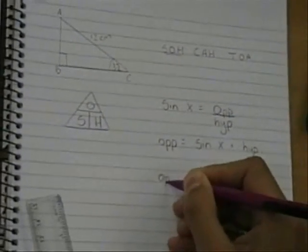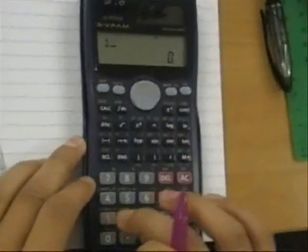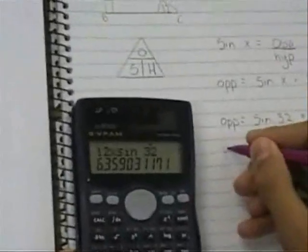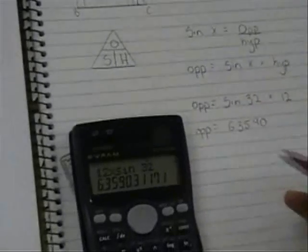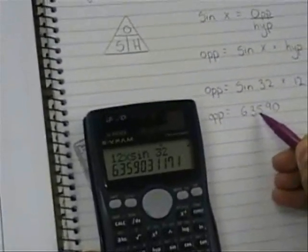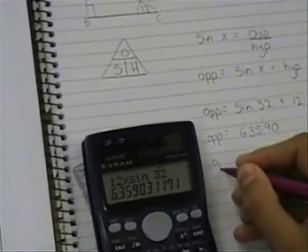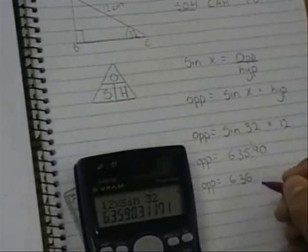So opposite equals sine 32 times by 12. So we are asked to do this in three significant figures. So there's the first one, second, third and as this is bigger than five we will round it up. And remember never ever forget your units.